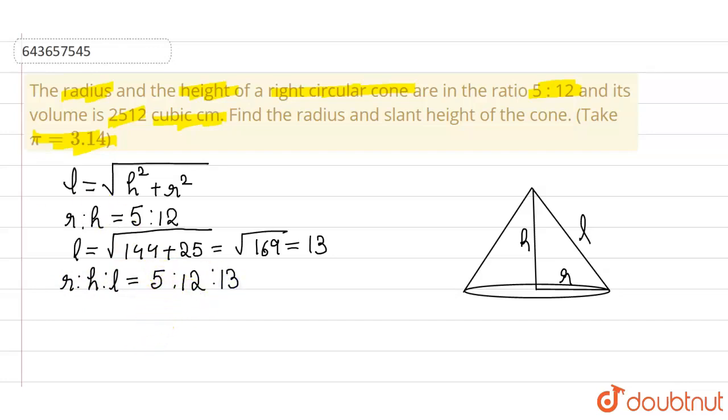Now, volume of the cone is equal to 1 by 3 pi R square H.